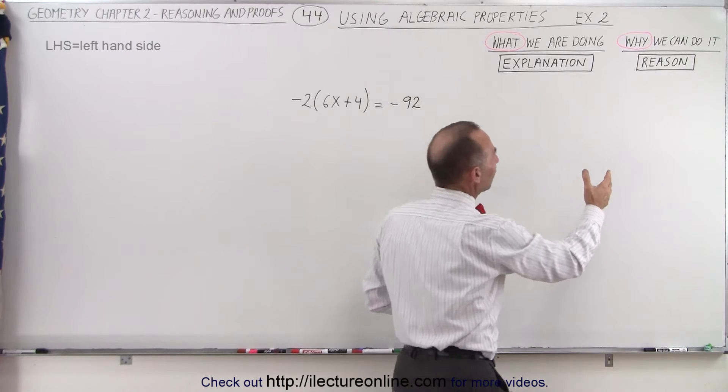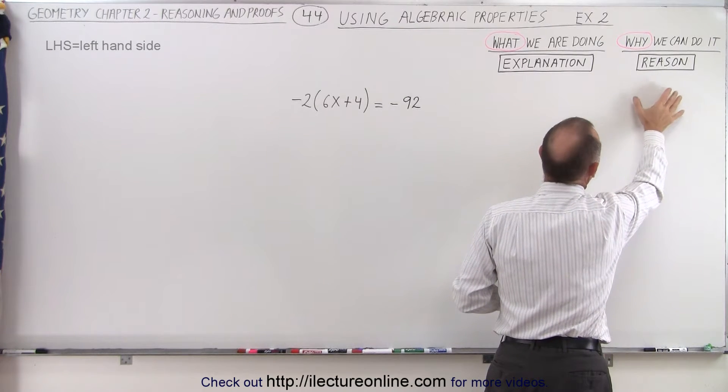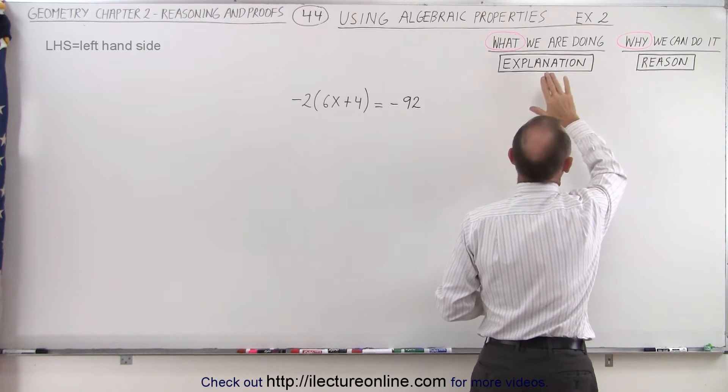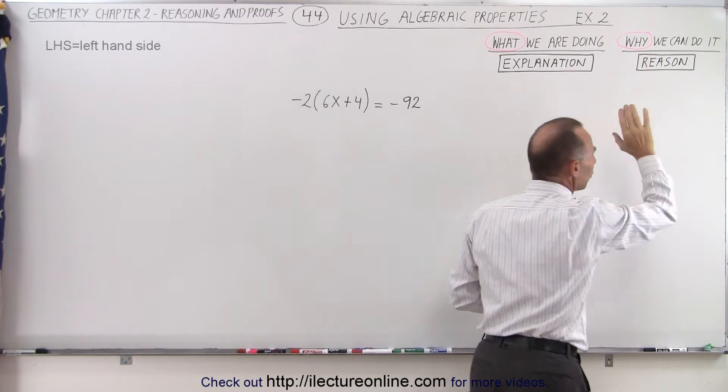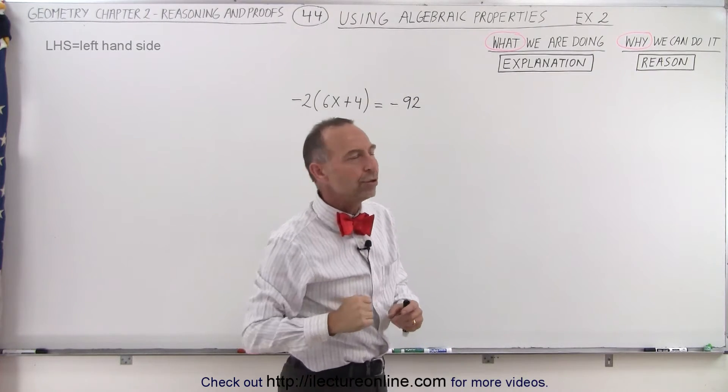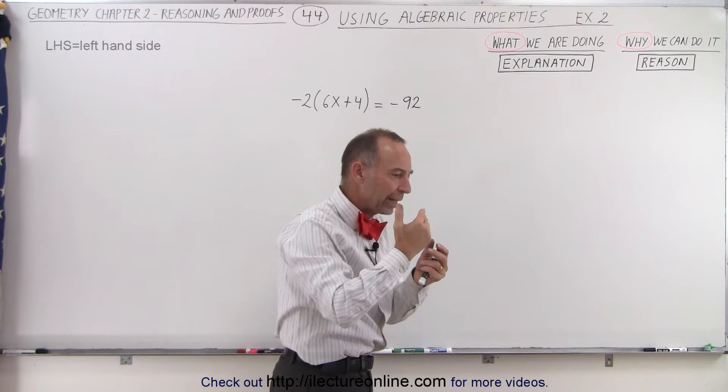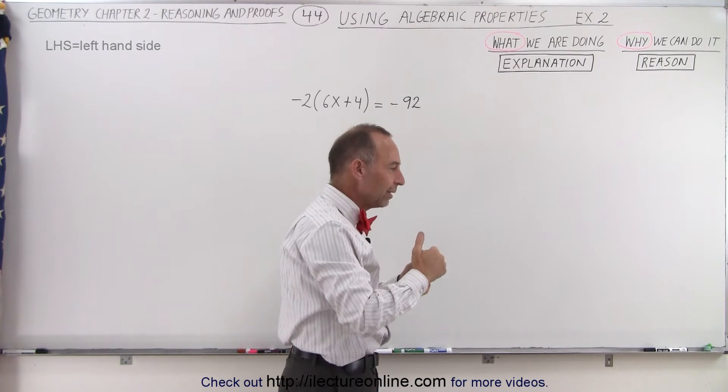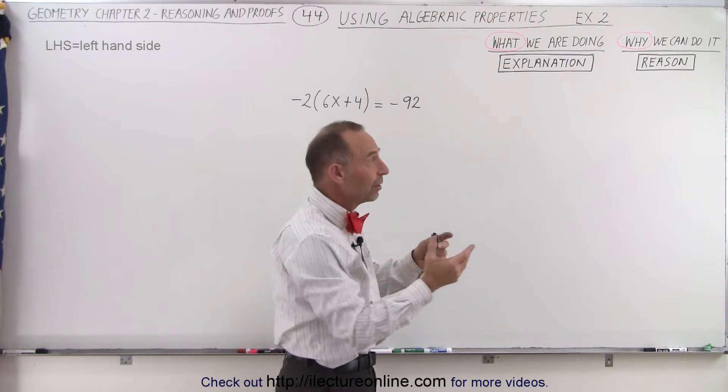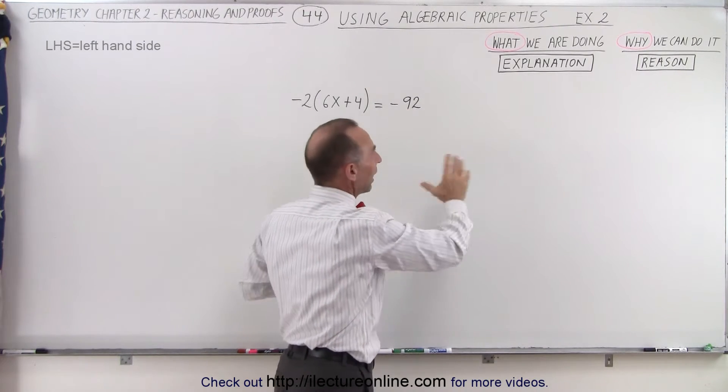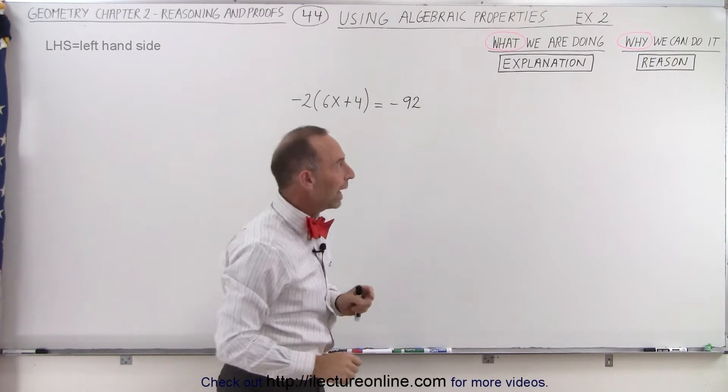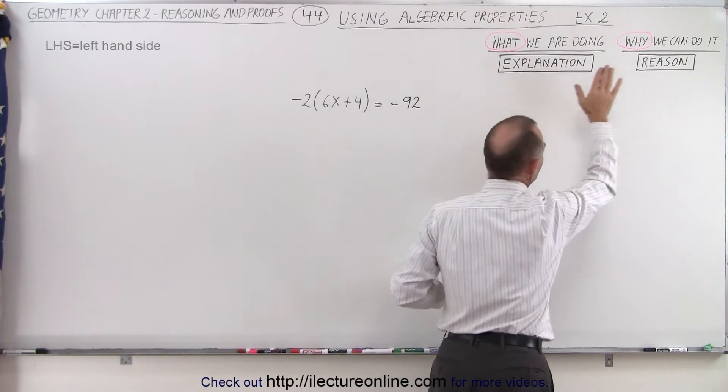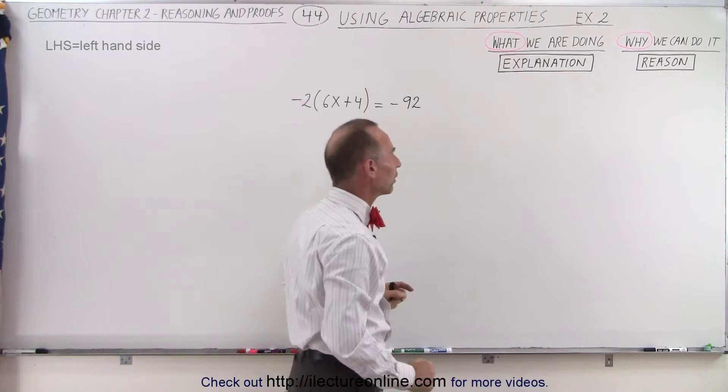On the right side here, we can see why can we do that? That's called the reason. So we have the explanation and the reason, the reason why we're allowed to do that. Because based upon this proof, postulate, or property, I'm able and allowed to do that. So we have the explanation of what we're doing and the reason why we can do it.